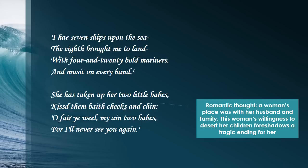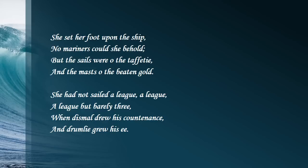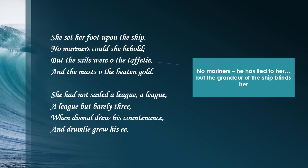She's ready to leave without a second thought — those seven ships and those bold mariners really won her over. The readers of the time would be thinking a woman's place was with her husband and family, so this woman's quick willingness to desert her children already foreshadows a tragic ending. She sets her foot upon the ship; no mariners could she behold. The sails were taffety and the mast of beaten gold. She had not sailed a league, a league, but barely three, when dismal drew his countenance and drumly grew his eye. We're already predicting bad things happening — he promised mariners, but there aren't any. So he has lied to her, though the ship is grand and made of gold.